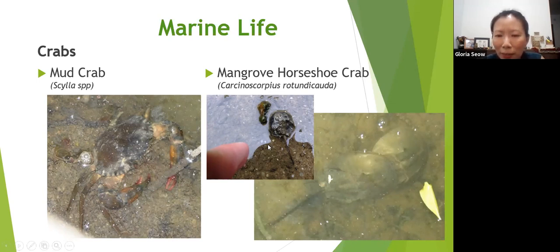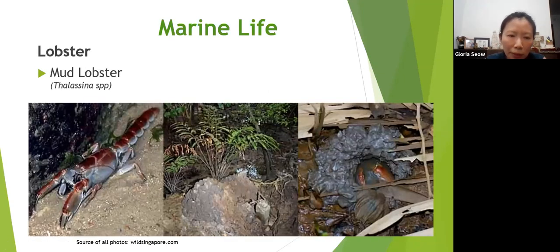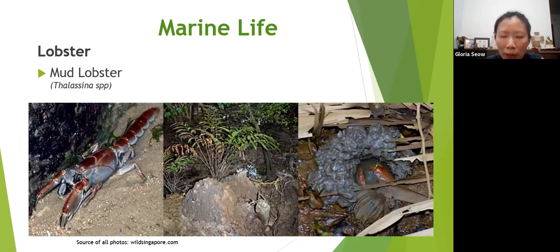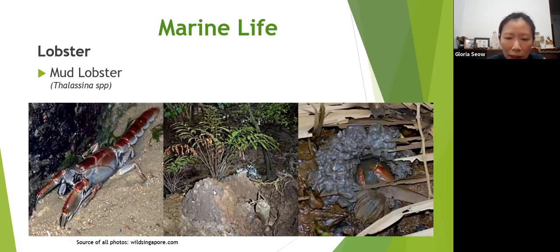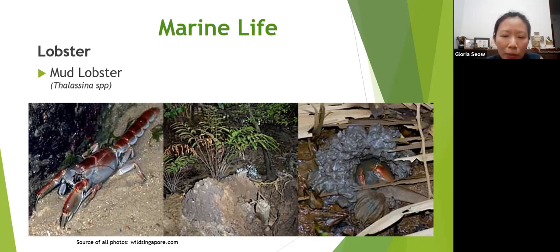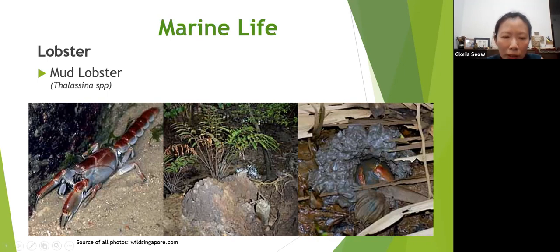The mud lobster is a very important creature. It's actually not a real lobster but is related to shrimps. You rarely see it because it's nocturnal. It eats mud, and as it digs deep and eats, it brings soil from deep underneath to the surface, creating so-called volcanoes or mud mounds that can be up to two metres tall. These mounds are dry and various wildlife can live in them — snakes, crabs, spiders, wasps, tree-climbing crabs — and plants like mangrove ferns and sea holly also grow on them.